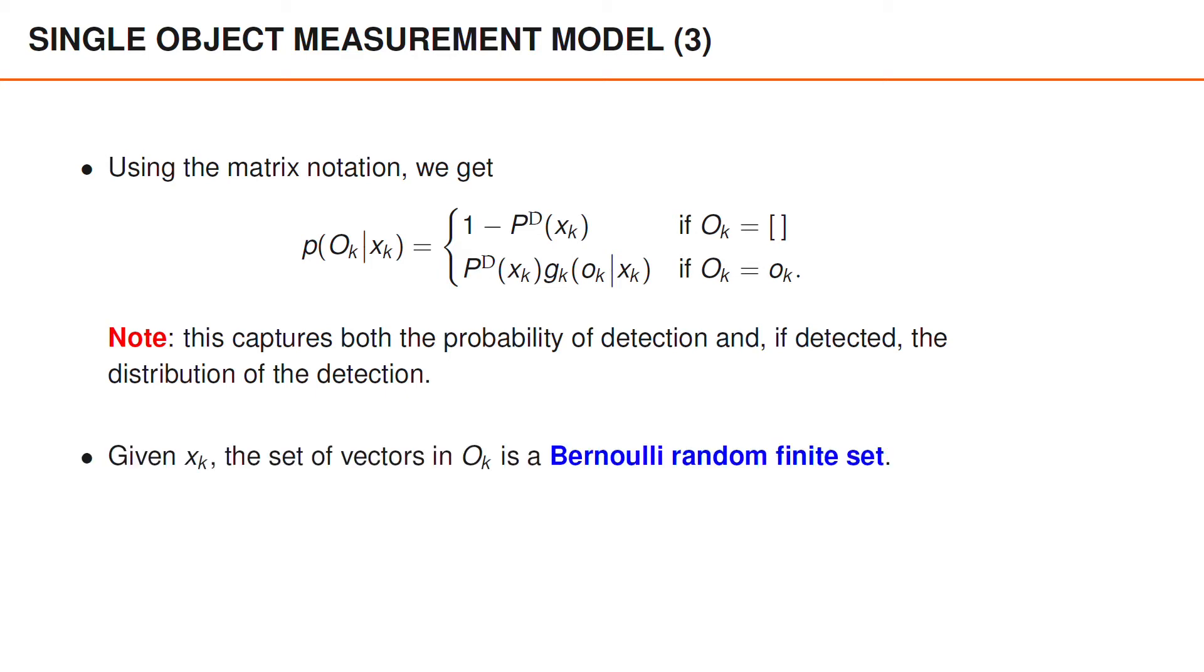Formally, given x_k, the set of measurement vectors in O_k is a Bernoulli random finite set. We will provide more details about random finite sets in week 4. And this week we keep the discussion about random finite sets to bare minimum in order to focus more on single object tracking.